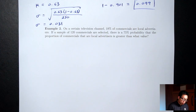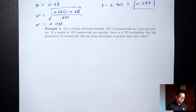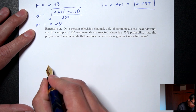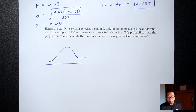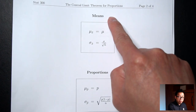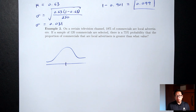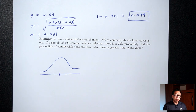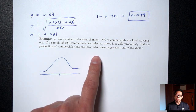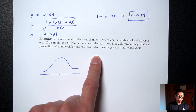Example 2: On a certain television channel, 18% of commercials are local advertisers. If a sample of 120 commercials is selected, there's a 75% probability that the proportion of commercials that are local advertisers is greater than what value? First, draw the normal distribution picture. Since the question doesn't contain the words 'mean' or 'standard deviation,' this is a proportion question.